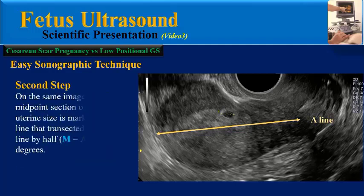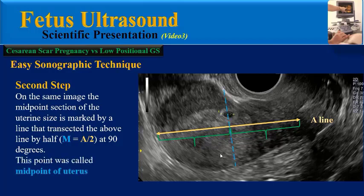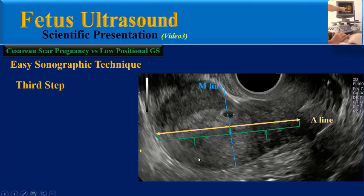In the second step, on the same image, the midpoint section of the uterine size is marked by a line that transects the A line by half at 90 degrees. This point is called the midpoint of the uterus, or M line.